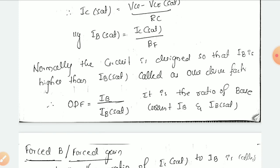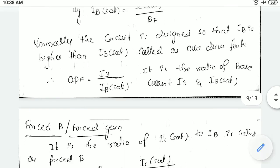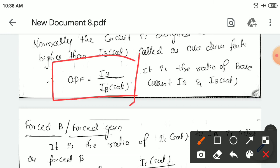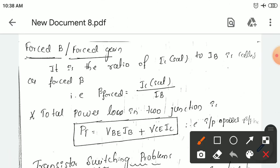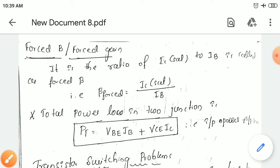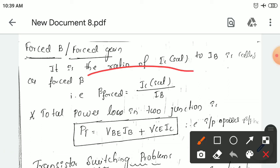This circuit is designed so that IB is greater than the IB saturation — that is called the overdrive factor. In some circuits, they are designed so that the base current is always greater than the base saturation current; that condition is called the overdrive factor. Overdrive factor is calculated as IB divided by IB saturation. Similarly, the forced beta — beta forced — is calculated as the ratio of saturation collector current to the base current; that is called forced beta or forced gain. Forced gain = IC saturation divided by IB.